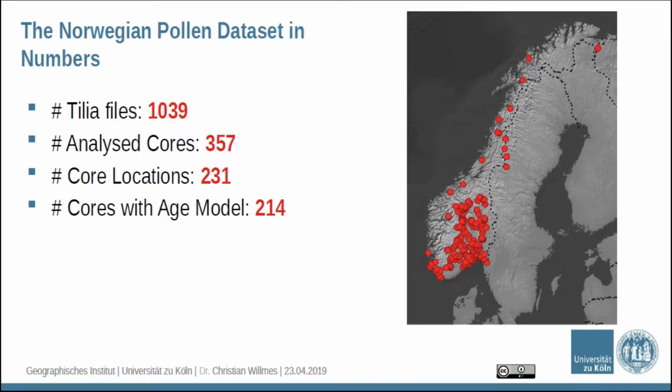This is the map of the coring locations of this dataset. It's a big folder with more than 1000 TILIA files. TILIA is a software for handling palynology data. These 1000 TILIA files are about 357 cores in 231 unique locations. Of those 357 cores, 200 have a proper age model within the data.